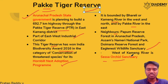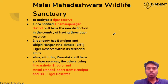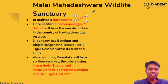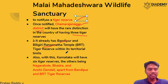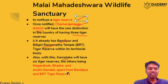Male Mahadeshwara Wildlife Sanctuary has been notified as a tiger reserve. It is in Chamarajanagar district of Karnataka. With this declaration, Chamarajanagar district now has a unique identity — it has three tiger reserves: Bandipur, Biligiri Ranganatha Temple, and now Male Mahadeshwara. Please remember that with this inclusion, Karnataka will have six tiger reserves: Nagarhole, Bhadra, Anshi Dandeli, Bandipur, and BRT, apart from Male Mahadeshwara.